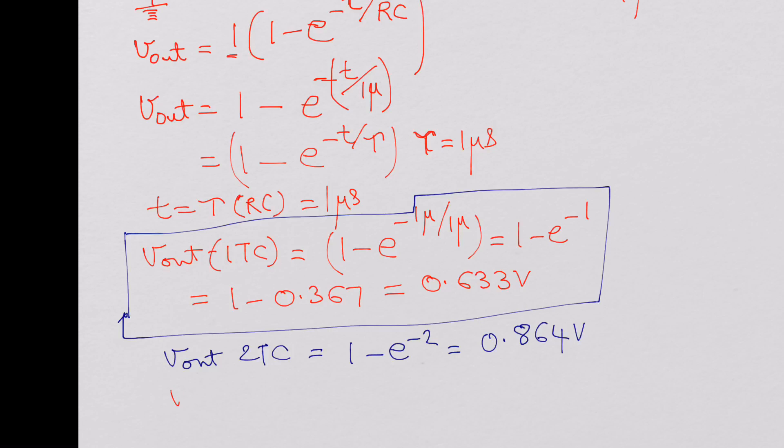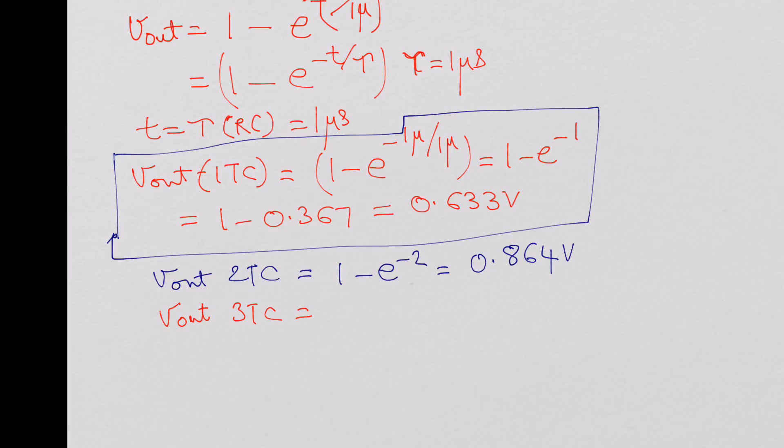And V out at 3 time constants would work out to be 1 minus e power minus 3, which is around 0.9503 volts.